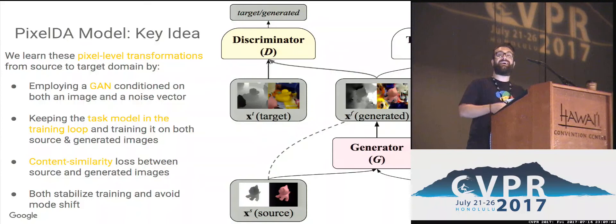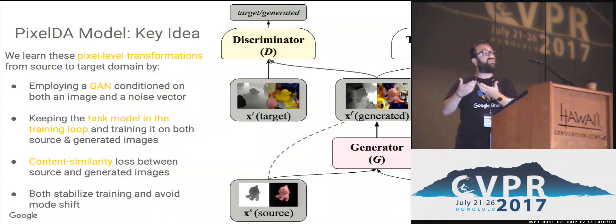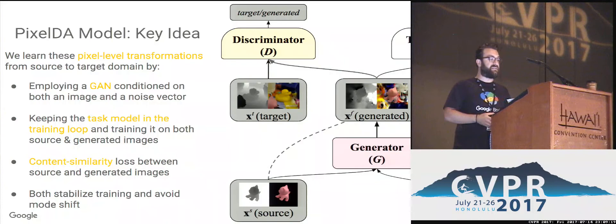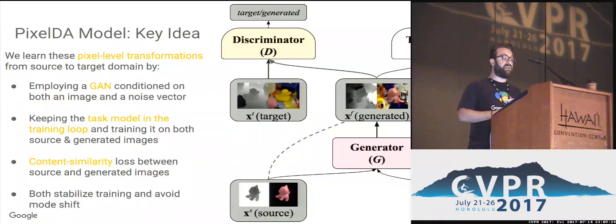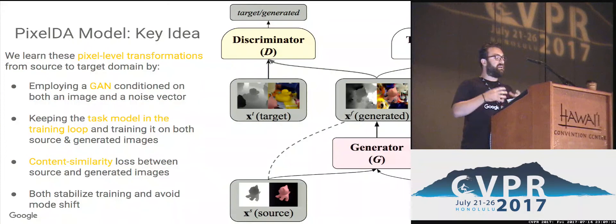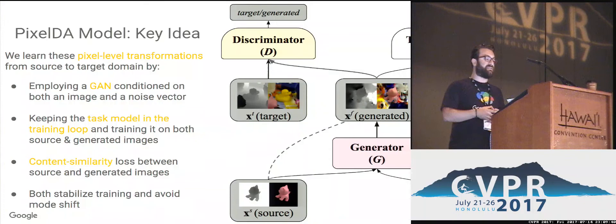The key idea behind PixelDA is that we learn pixel-level transformations from source to target domain by employing a generative adversarial neural network conditioned on both a source image and a noise vector. We have a discriminator network trying to discriminate between target and generated images, and a generator network trying to produce generated images that confuse the discriminator. A key concept is that we also train the task model simultaneously with the discriminator, on both source and generated images. We also have a content similarity loss between source and generated images, which helps stabilize training and avoid mode shift — a problematic case where, for example, a cat would consistently be converted into a duck.